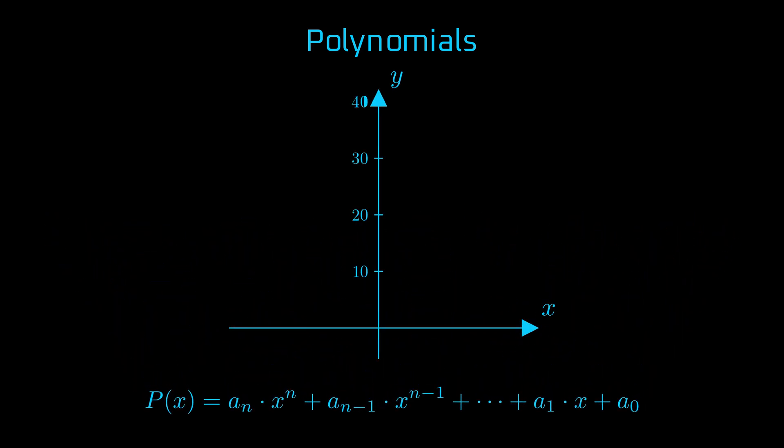In cryptography, polynomials allow us to represent sets of points in a structured way. For instance, consider the points (0,30), (1,9), (2,-4), (3,15).